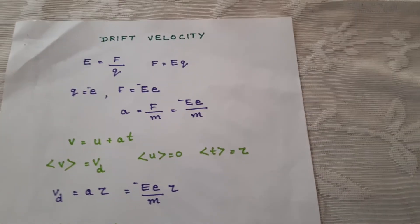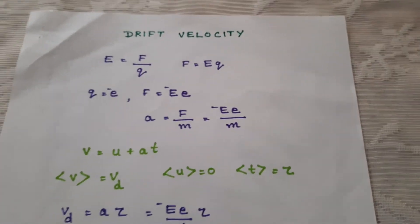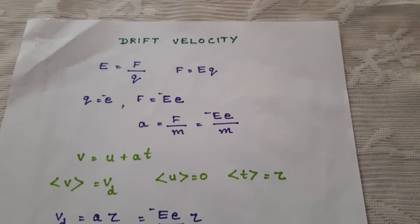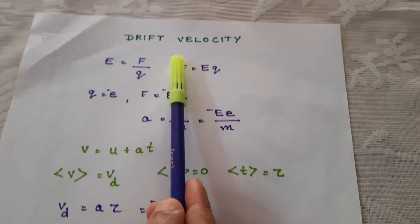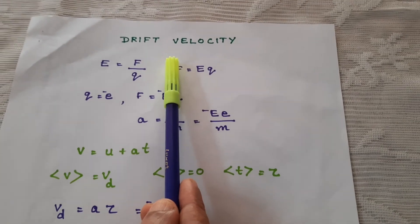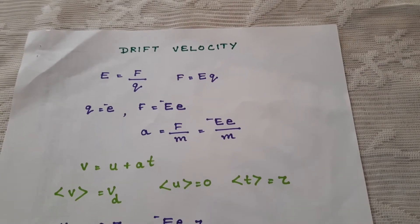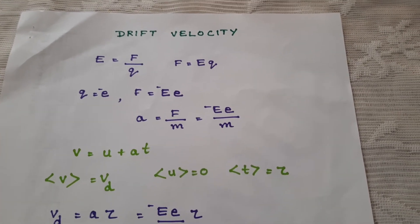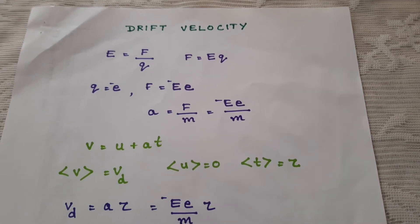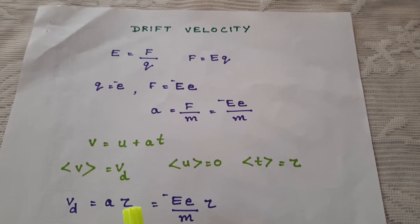Now let us see the velocity of the electrons in a conductor when an electric field is applied. This velocity is known as drift velocity. A conductor contains free electrons, and the free electrons are in random motion, so the net current in a conductor is zero in the absence of an applied field.